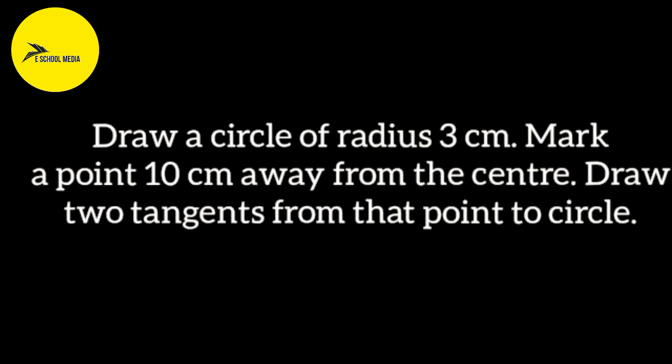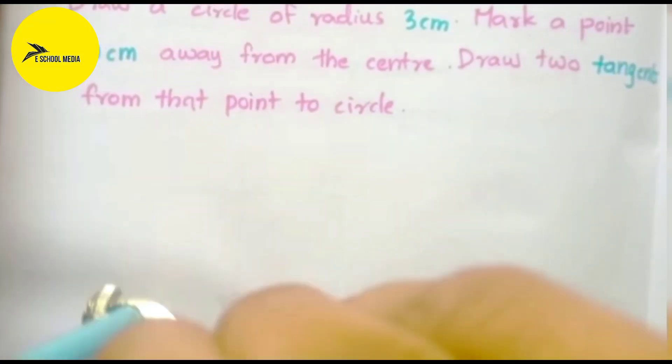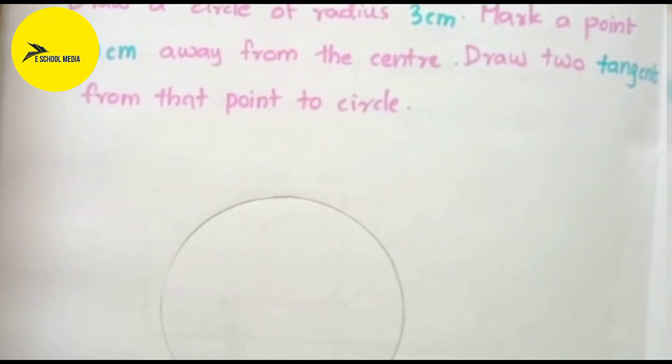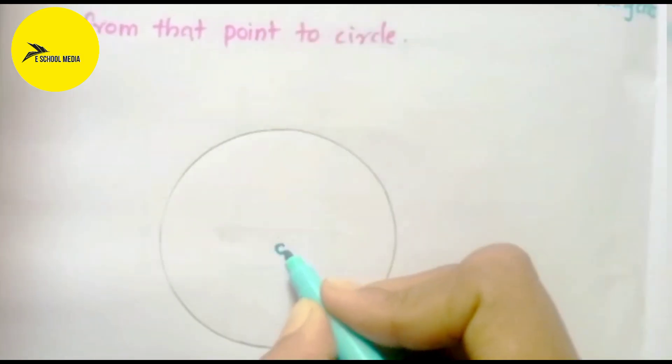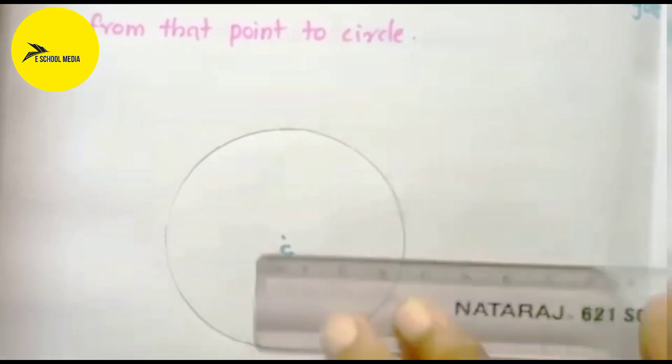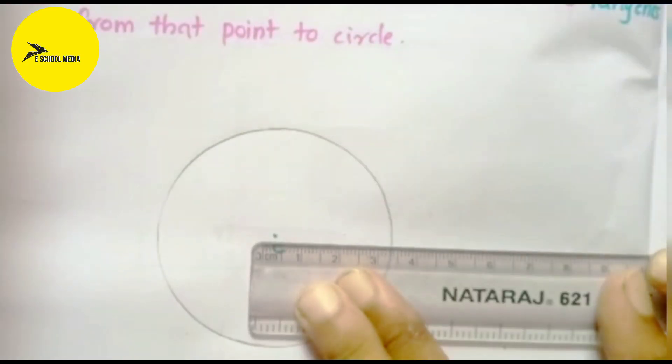First, draw a circle of radius 3 cm, mark a point 10 cm away from the center. Draw two tangents from that point to the circle. That is a circle of radius 3 cm. The circle of radius — the center is a point P at 10 cm.